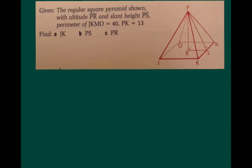Let's take a look at this example here, where they tell us that the perimeter of the base, JKMO, equals 40. And they ask us to find, in part A, the length of JK. We'll notice that JK is just one of the sides, and since I can just divide the perimeter of 40 by 4, I'll see that JK equals 10.